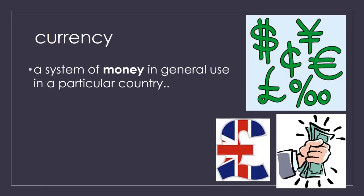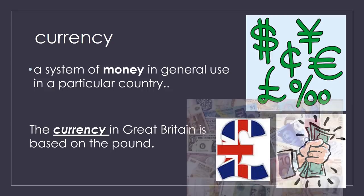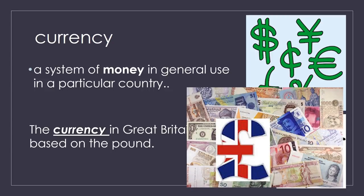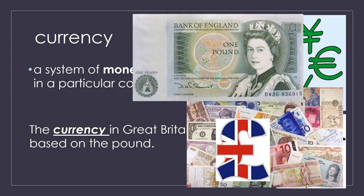Currency — a system of money in general use in a particular country. The currency of Great Britain is based on the pound, shown by that fancy L symbol you see in the pictures. Currency is money, and each country has its own.